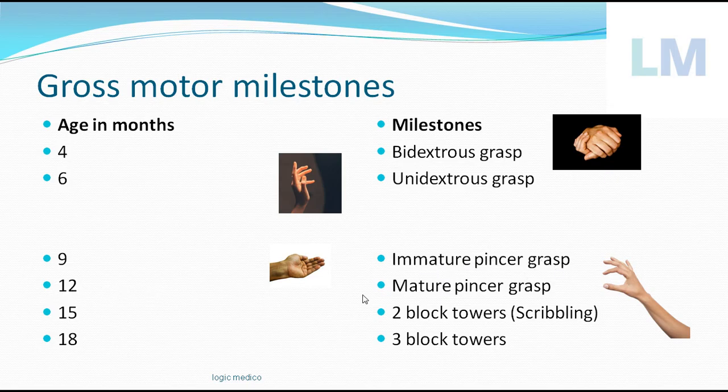At twelve months — the child's first birthday — it achieves mature pincer grasp. The child is able to hold a plastic knife with the thumb and index finger tip-to-tip, like cutting a birthday cake. That is the mature pincer grasp, compared to the immature version where all fingertips are used together.